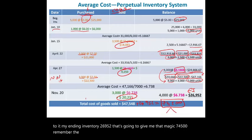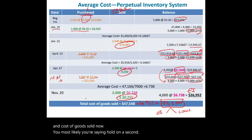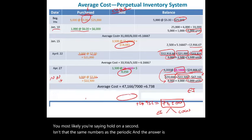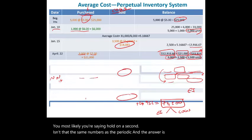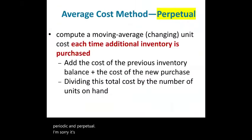Adding all cost of goods sold: $18,083 + $9,250 + $20,215 = $47,548. Adding ending inventory of $26,952 gives us back that magic number: $74,500. Notice the $74,500 is always split between ending inventory and cost of goods sold. The periodic and perpetual average cost methods give similar but slightly different results due to rounding.